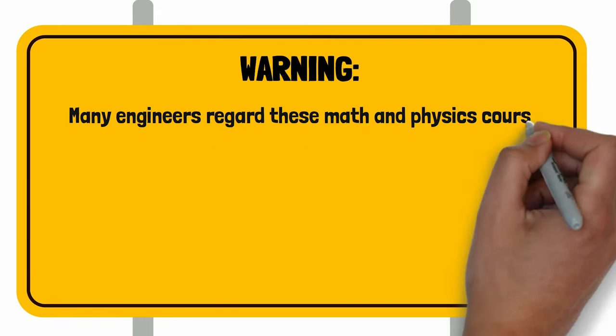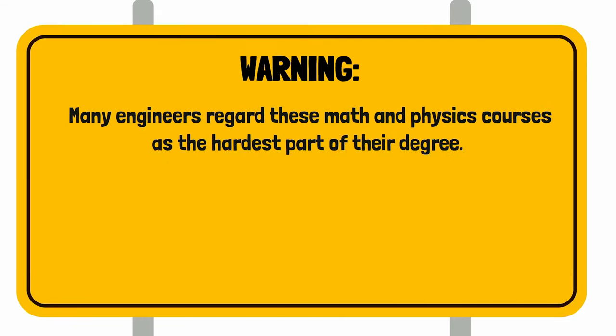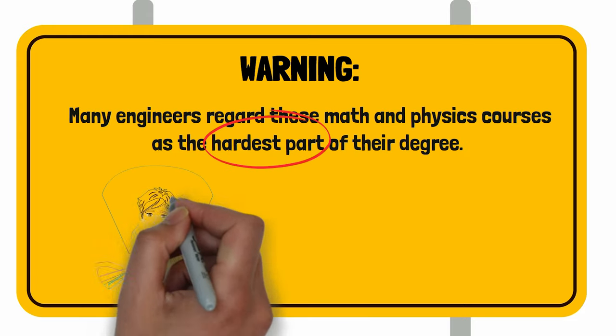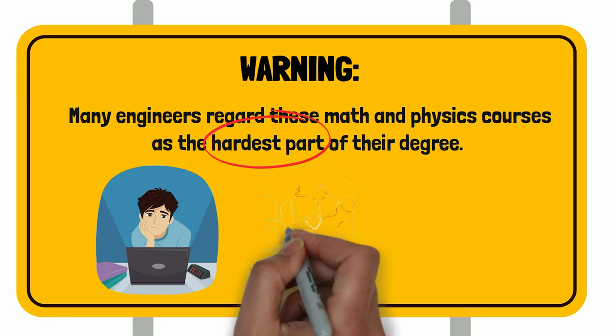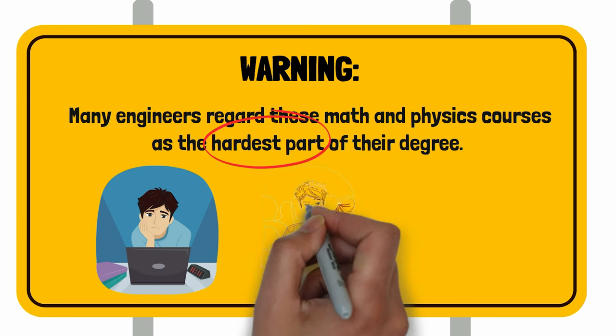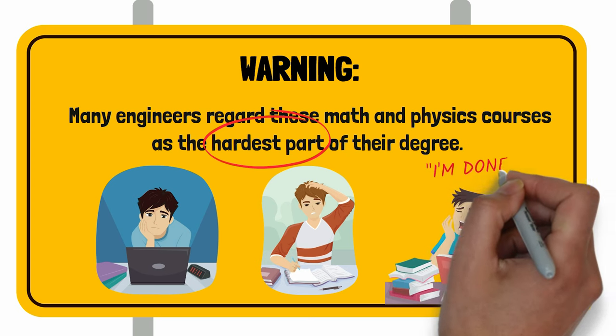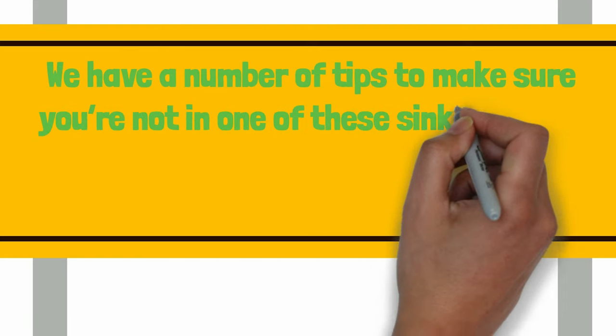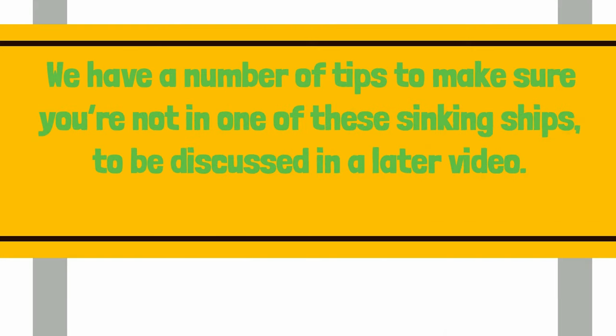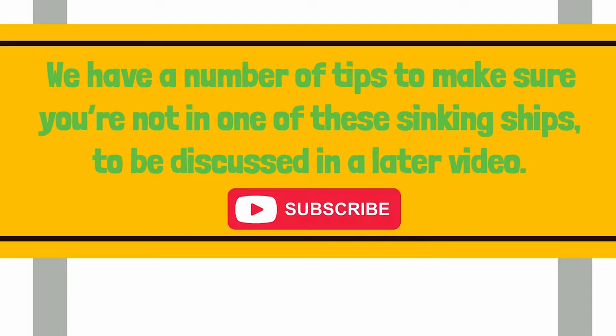We also need to warn you, many engineers regard these math and physics courses as the hardest part of their degree. Yeah, you heard me right. These introductory courses can be the toughest. Although the problems get more technically challenging later on, the difficulty and rapid progression of these courses just completely shock students used to slower-paced high school classes. This is why you'll see the most students dropping out of the degree in this stage. We have a number of tips to make sure you're not in one of these sinking ships, to be discussed in a later video. So, subscribe so you don't miss it.